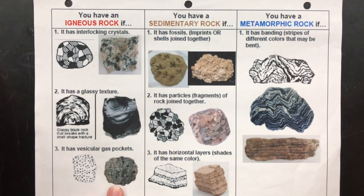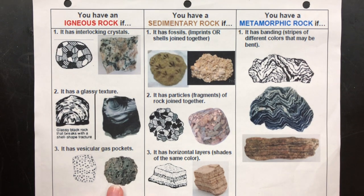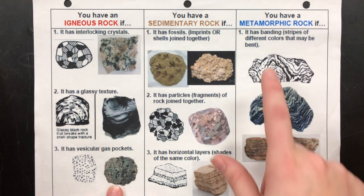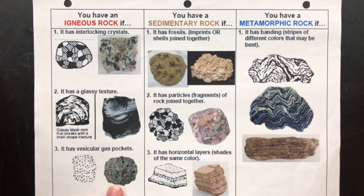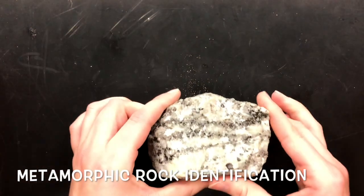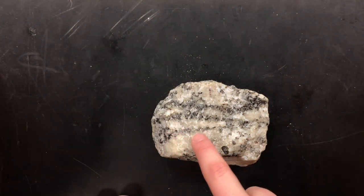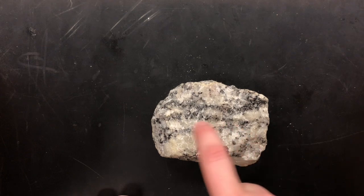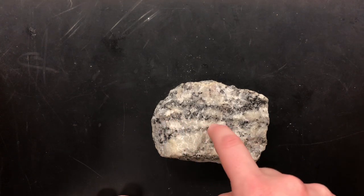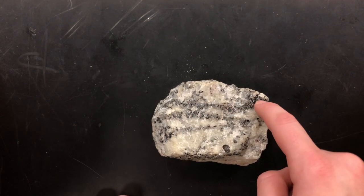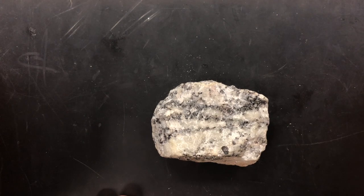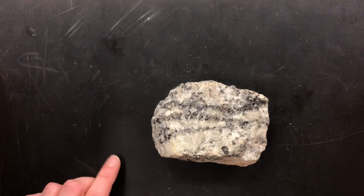Now we have our last type: metamorphic rocks. Metamorphic rocks show banding — banding of different colors. Here I have a sample with a band of black, a band of white, another band of black, some white, and more black. That is our banding — that's what we're looking for.